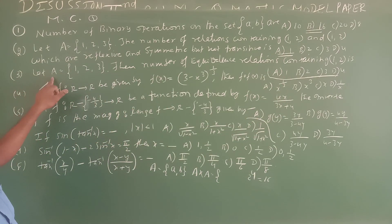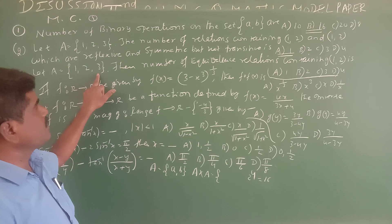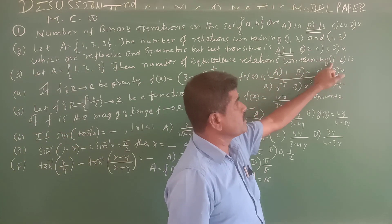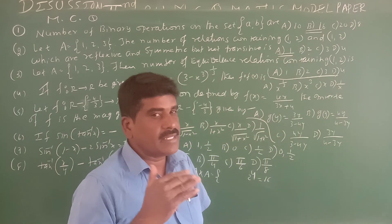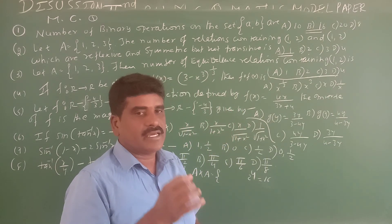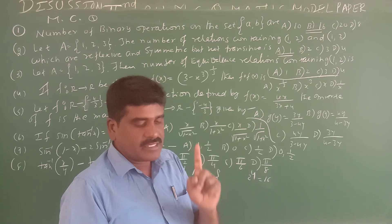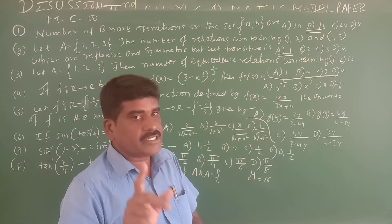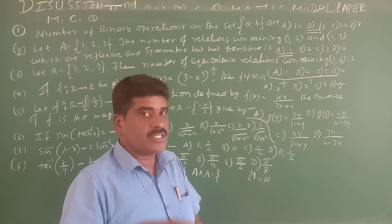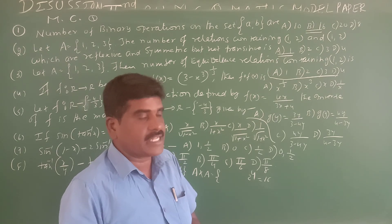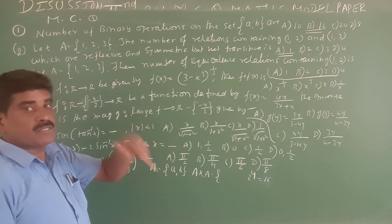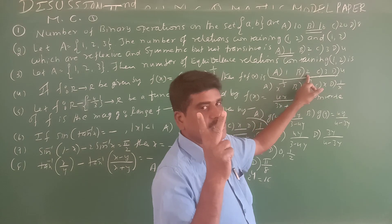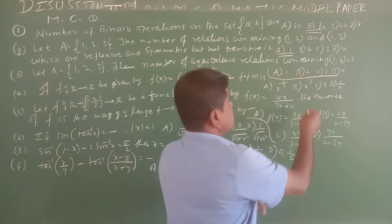Third one: Let set A = {1, 2, 3}. Find the number of equivalence relations containing (1,2). An equivalence relation must satisfy reflexive, symmetric, and transitive properties. The number of such equivalence relations is 2, so Option B is the answer.